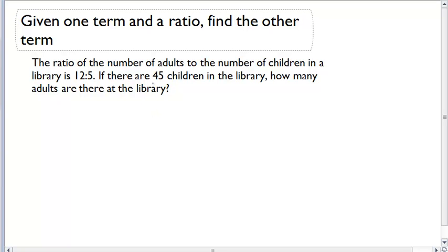Okay, so we start off with 45 children. We start off with a ratio of 12 to 5. Let's try to figure this out.